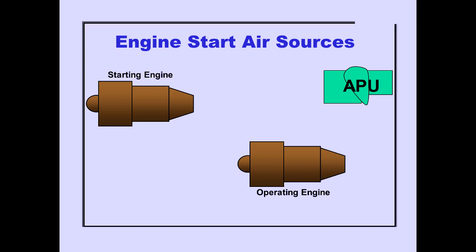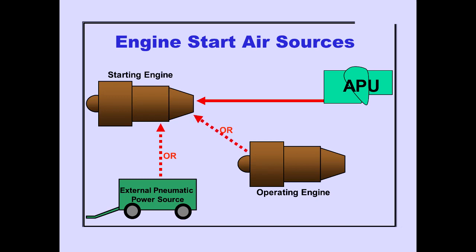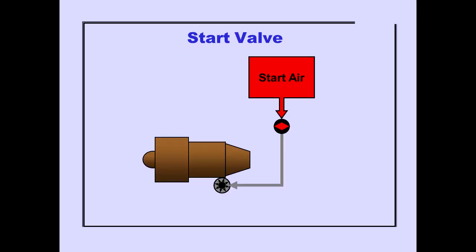The APU is normally used to start the engines. However, a ground source or an operating engine may also be used. A start valve controls start air to an air-driven starter.